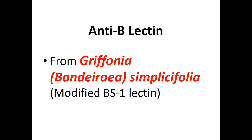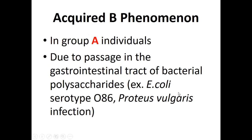The anti-B lectin from Griffonia simplicifolia, or the modified BS-I lectin, is prepared for differentiating group B variants. The ability to differentiate true B antigens from acquired B-like antigens is through the use of anti-B lectin — acquired B-like antigens do not agglutinate the modified BS-I lectin, whereas true B antigens will cause positive agglutination of the modified BS-I lectin antiserum.